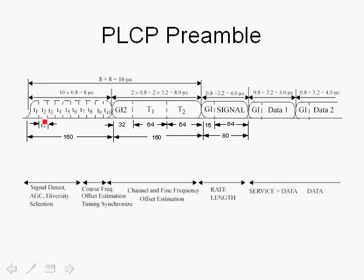The PLCP preamble is 16 microseconds long and contains 12 symbols. The first part is called the short preamble and the second is the long preamble. The short preamble consists of 10 symbols, each 16 samples long — at 20 MHz sampling rate that is 800 nanoseconds each, for a total of 8 microseconds. The long preamble consists of two 64-sample symbols that are exact duplicates, called the long symbols, protected by a guard interval of 32 samples, for a total of 160 samples or 8 microseconds.